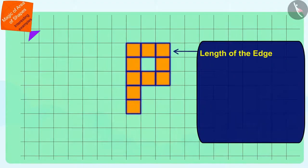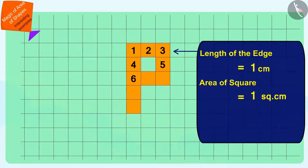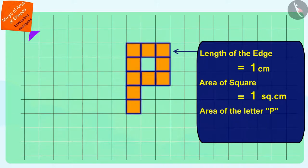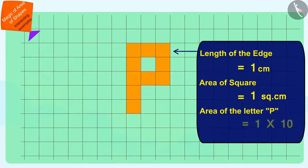The length of the edge of each square-shaped sticker is 1 cm. So, the area of each square-shaped sticker will be 1 square cm. Pinky has used 10 such stickers in her name letter P. Therefore, the area of the letter P in her name will be 1 times 10, 10 square centimeters.